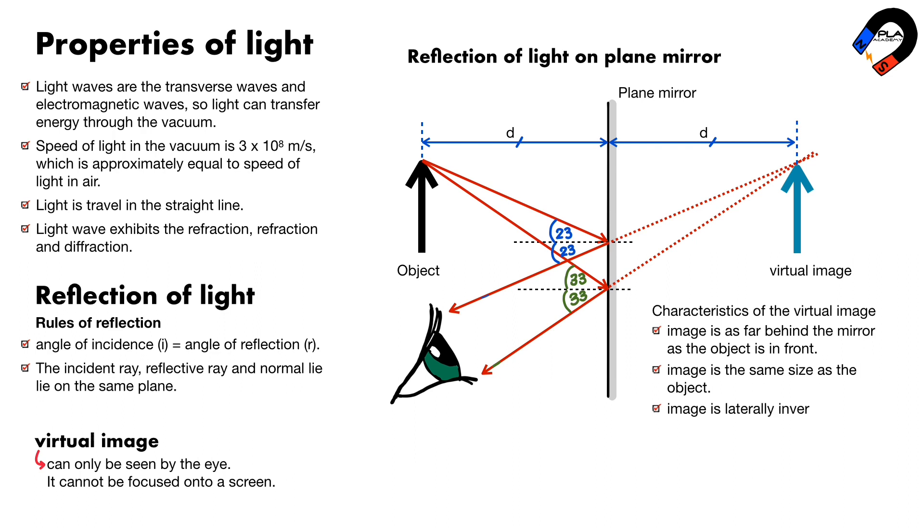The image is laterally inverted, which means left and right are swapped around. The image is right way up, or upright, as the object.